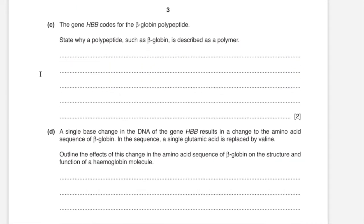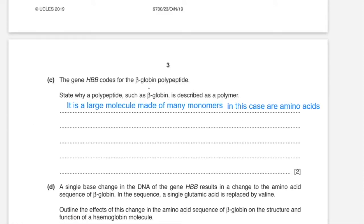C: the gene HBB codes for beta globin polypeptide. Suggest why a polypeptide such as beta globin is described as a polymer. You'd use the terms mentioned in the definition of a polymer, so that would be a giant biological molecule made of monomers. Because this question is specific to beta globin as a polymer, you'd have to write a feature specific to beta globin, and so its monomers would be amino acids.